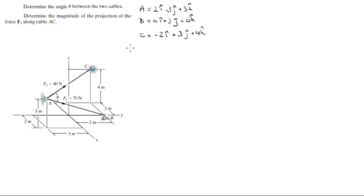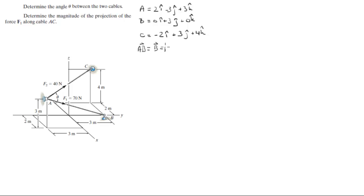Now that you have the position vectors, you want to find the Cartesian vector form of the forces. Let's start with vector AB. Vector AB is equal to position vector B minus position vector A.